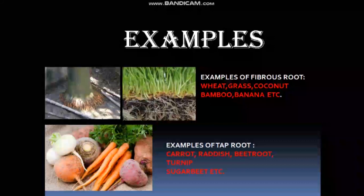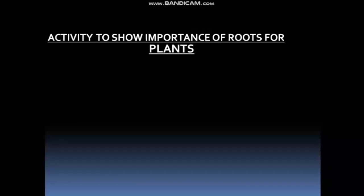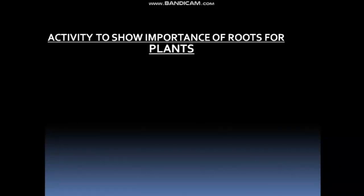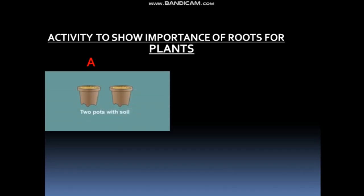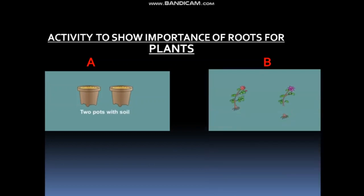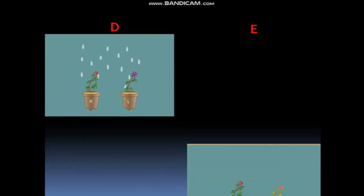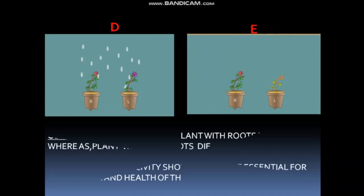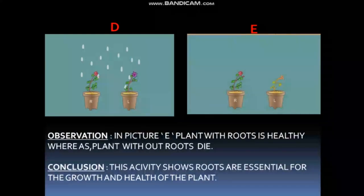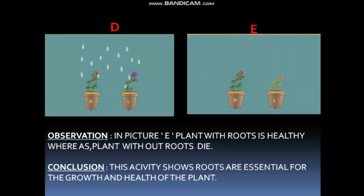Here is an activity to show the importance of roots. Take two pots filled with soil and two plants — one with roots and another without roots. Fix both plants in the pots and water them for at least a week. You will observe that the plant with roots is healthy, whereas the plant without roots will die. This activity shows that roots are very important for plants.